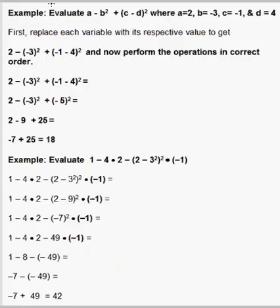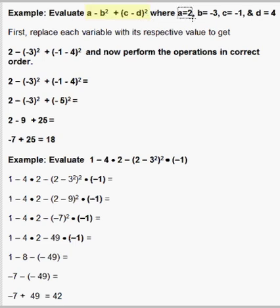Now we're going to look at an example where we evaluate an expression that has variables in it. We're going to evaluate a minus b squared plus the quantity c minus d, quantity squared, where a equals 2, b equals negative 3, c equals negative 1, and d equals 4. The first step is to replace each variable with its numerical equivalent: a with 2, b with negative 3, c with negative 1, and d with 4. So we get the expression 2 minus the quantity negative 3 squared plus negative 1 minus 4 quantity squared.